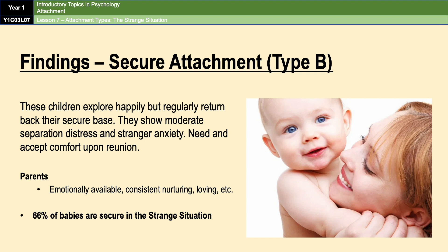The percentages for attachment types will vary by culture. For example, the percentage for secure attachment is much higher than 66% in Britain; however, 66% is an average across a variety of studies conducted. In the next video on cultural variations in attachment, we'll go into more detail on the different results across the world.